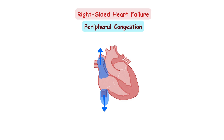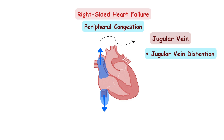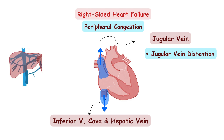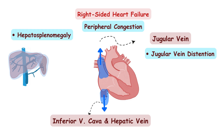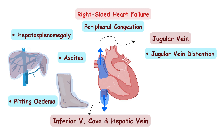The backup of fluid into the jugular vein is manifested as jugular vein distension. Backup of fluid into the inferior vena cava and hepatic vein is manifested as congestion of the liver and spleen, causing hepatosplenomegaly and, in the long term, cardiac cirrhosis. There is also a buildup of fluid into the peritoneal space called ascites, and most commonly, due to the effect of gravity, buildup of fluid in the lower extremities leading to pitting edema, to which the patient often complains of having heavy legs. In short, the patient is drowning in their own fluid.